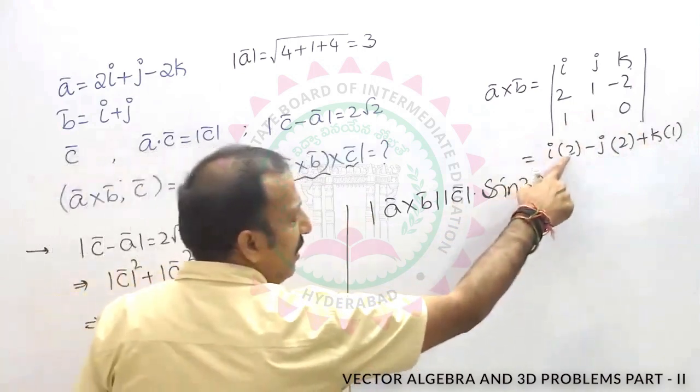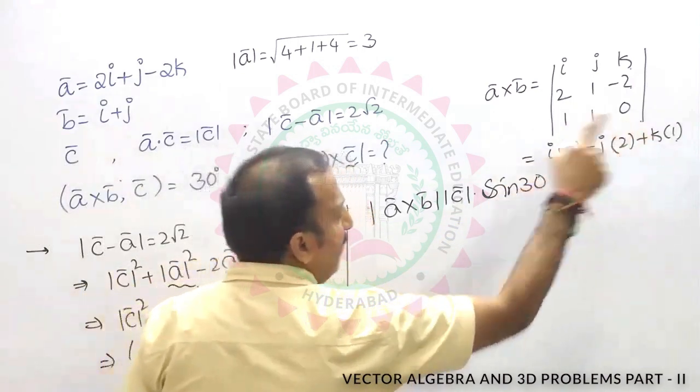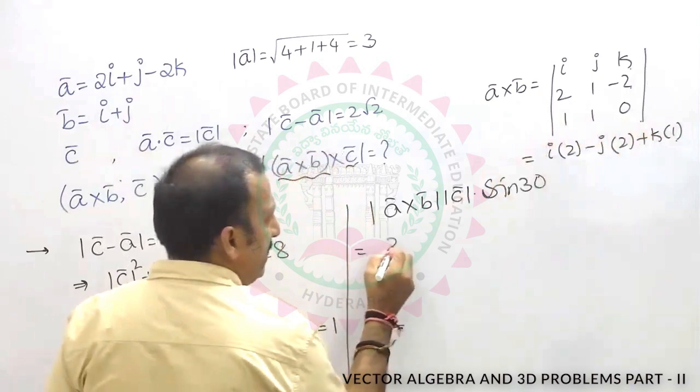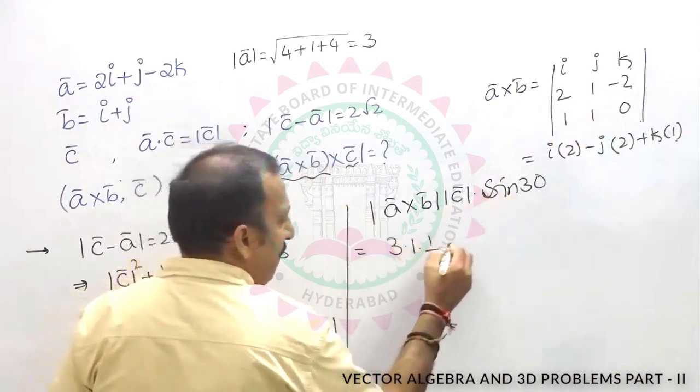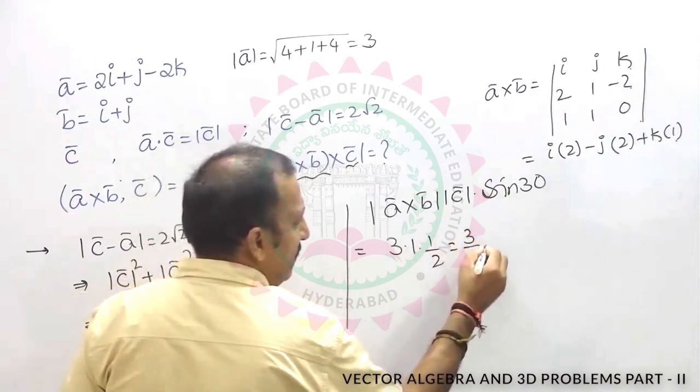Mod a cross b is nothing but 4 plus 4, 8, 8 plus 1, 9. Root 9 means 3. Mod c is 1 into sin 30 is a half. So answer is 3 by 2.